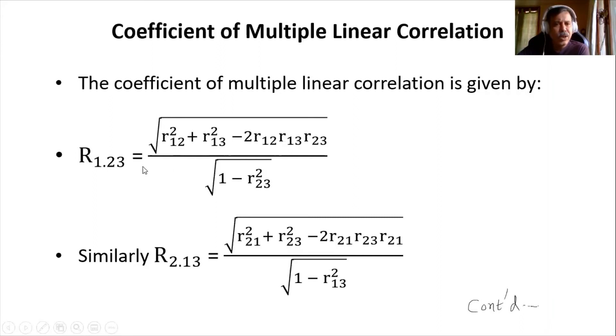What will be the formula? There is a pattern. You may notice r12 here, this 1 and 2 the square, then 1 and 3 the square minus all the 3 means all the possibilities: 2 times r12, r13, r23. The whole thing divided by 1 minus these two after the dot, r23 the square.